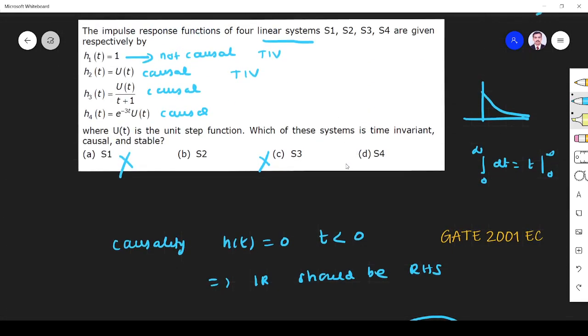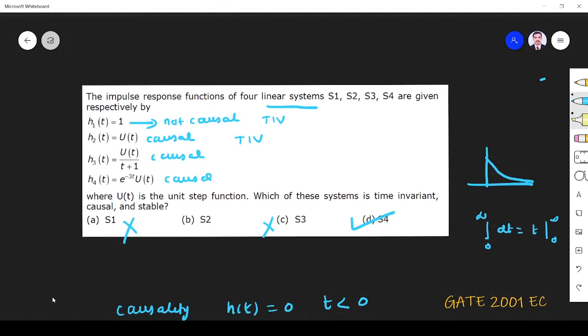Yes, four is also time variant system. So this is not causal, so this one is also not possible. So yes, two is correct answer. Thank you.